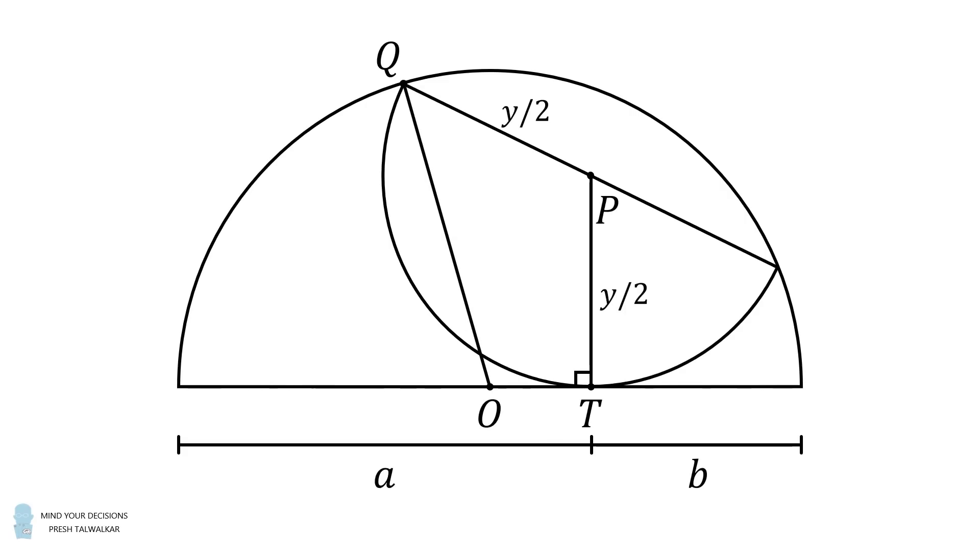Now construct OQ. It's a radius of the large semicircle. The large semicircle has a diameter equal to a plus b, so its radius will be half of a plus b.